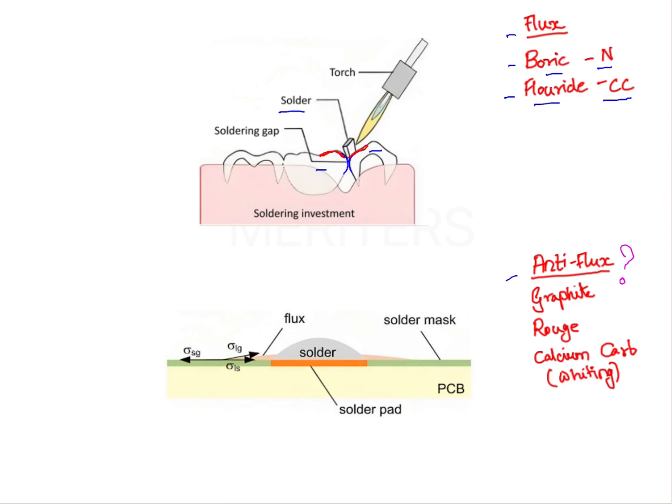You would apply anti-flux on the occlusal surface so that when the solder is melting, if your hand moves by mistake—because this is an uncontrolled procedure—the application of anti-flux will prevent your solder from flowing into the undesirable areas. It will block the solder.